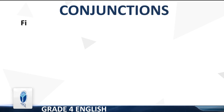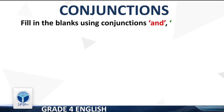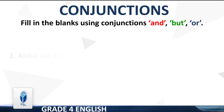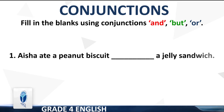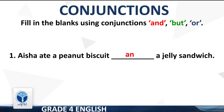The question is: fill in the blanks using conjunctions — and, but, or. Point 1: Aisha ate a peanut biscuit dash a jelly sandwich. The right answer is 'and'. The sentence will be: Aisha ate a peanut biscuit and a jelly sandwich.